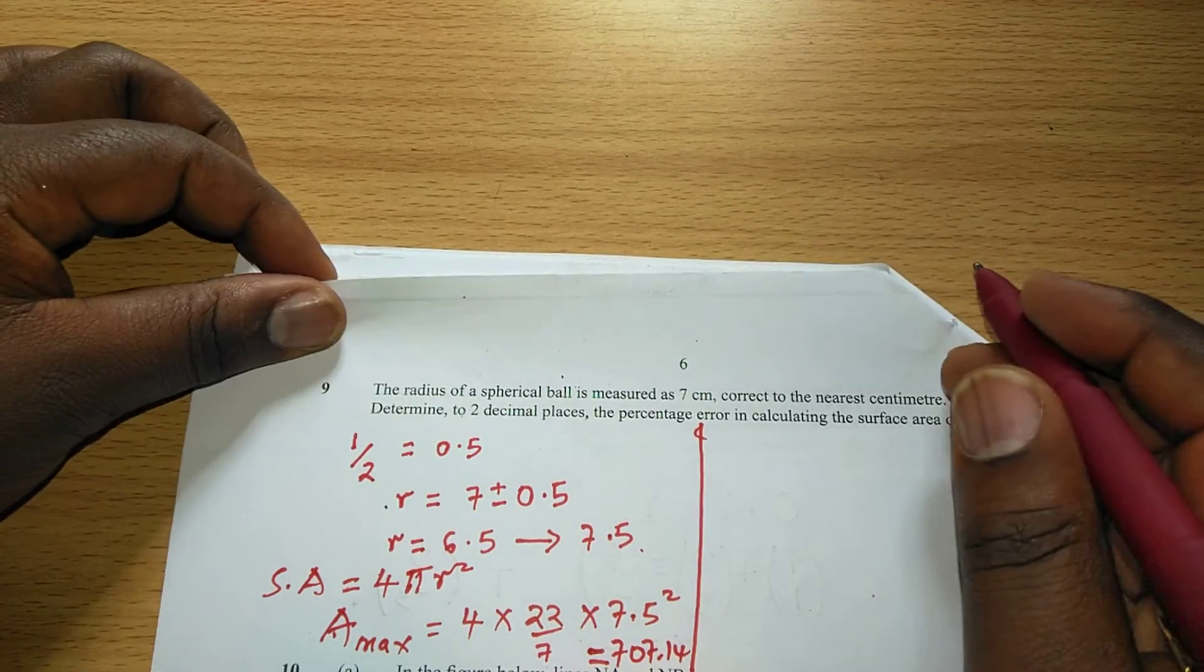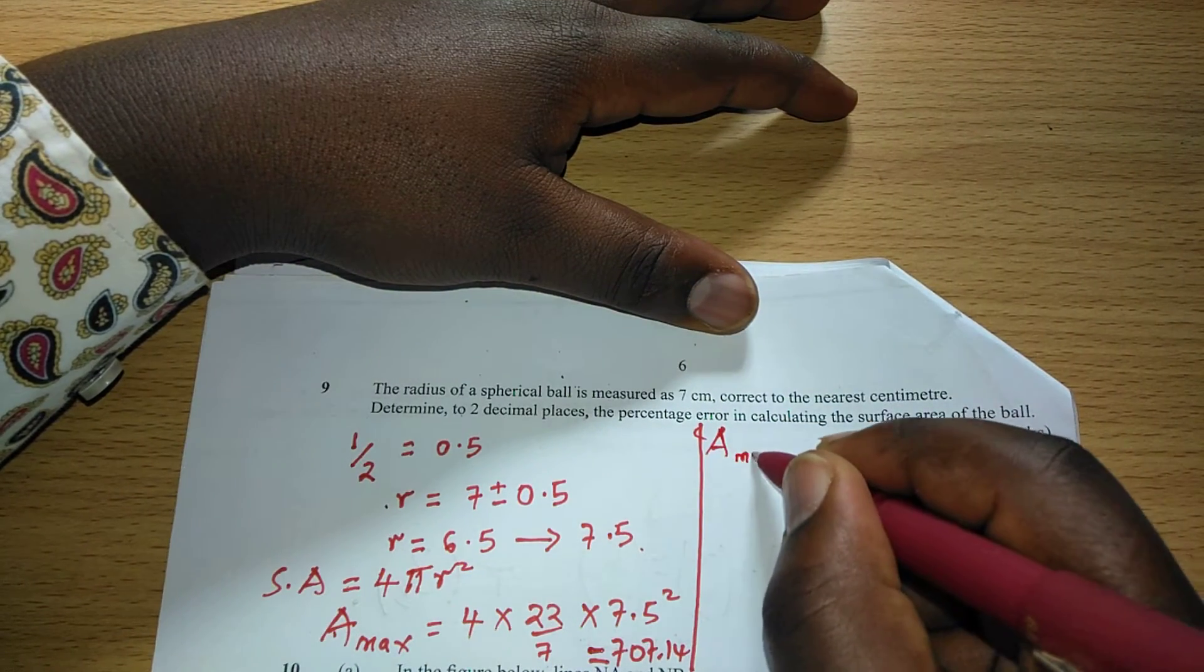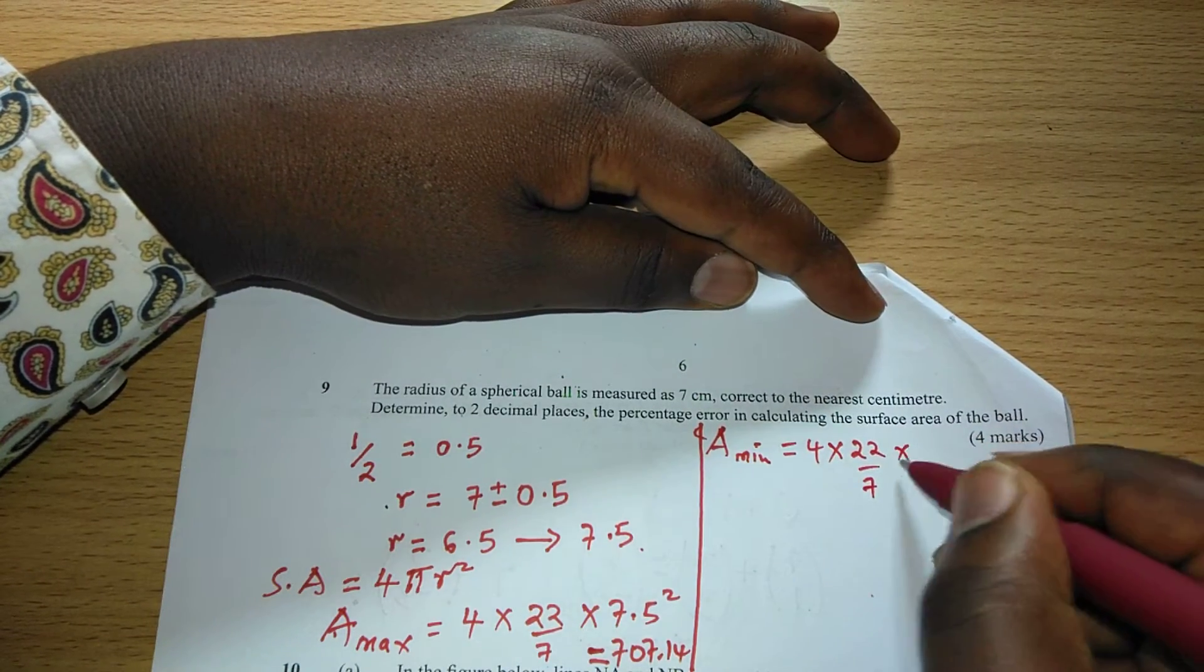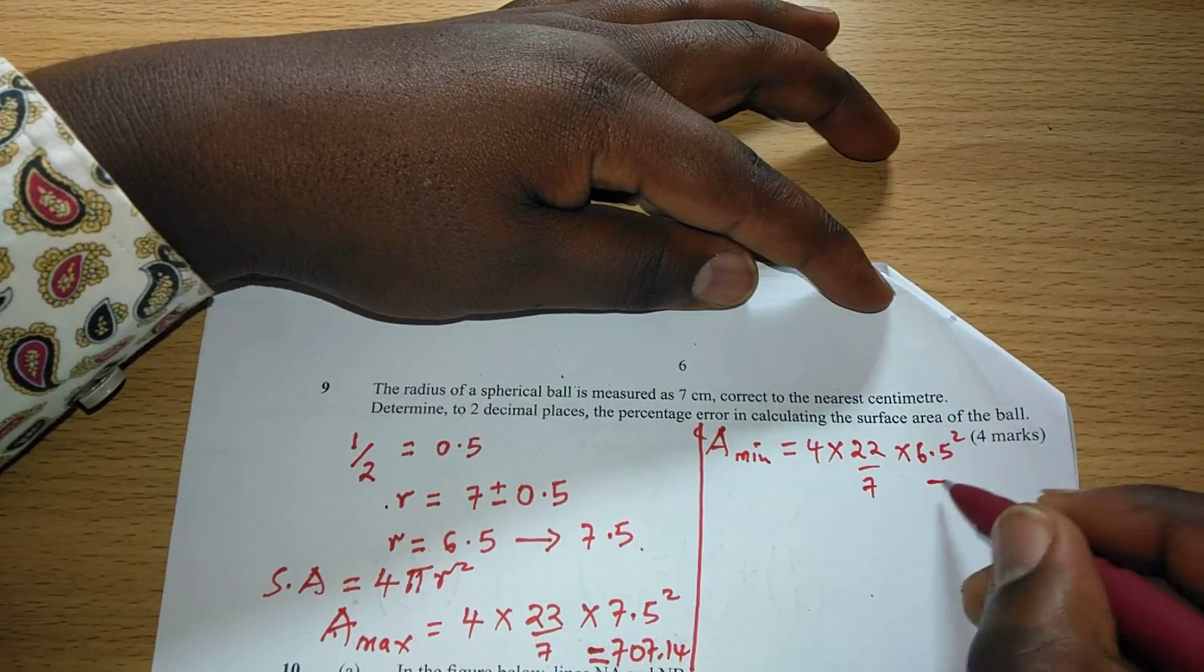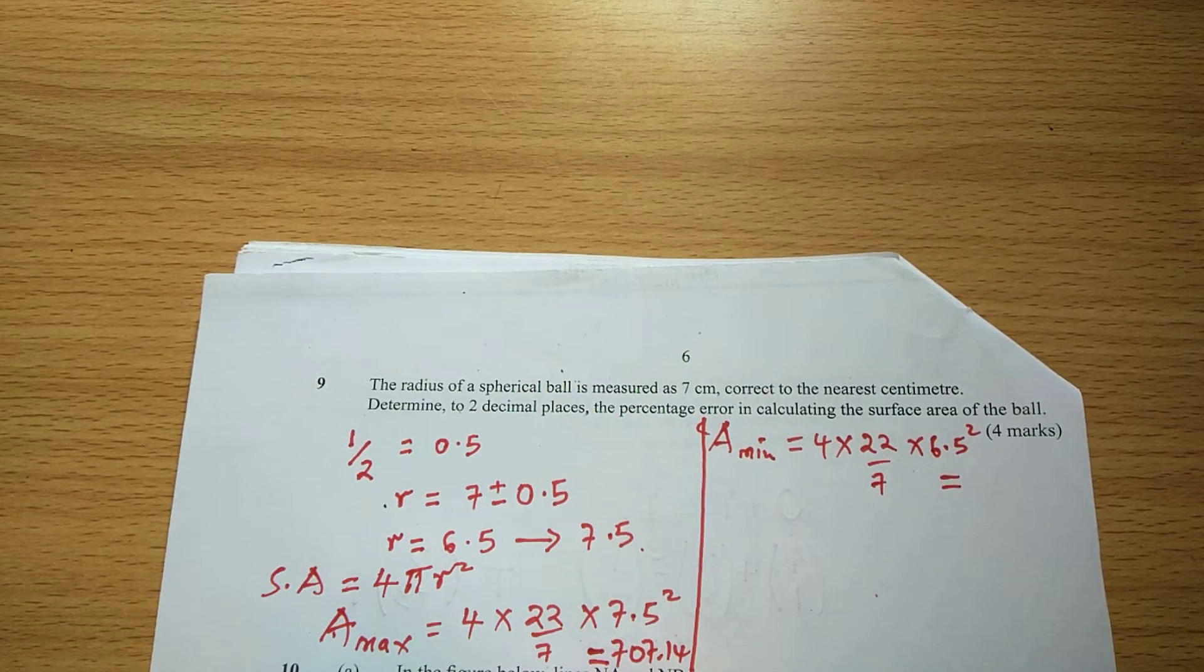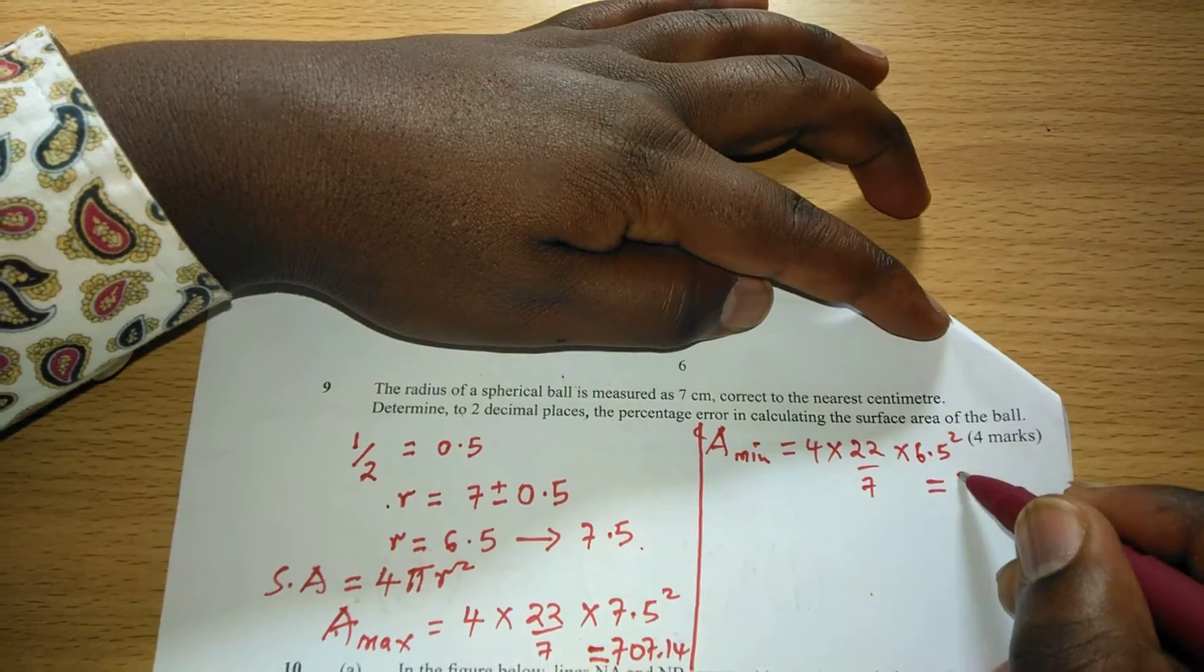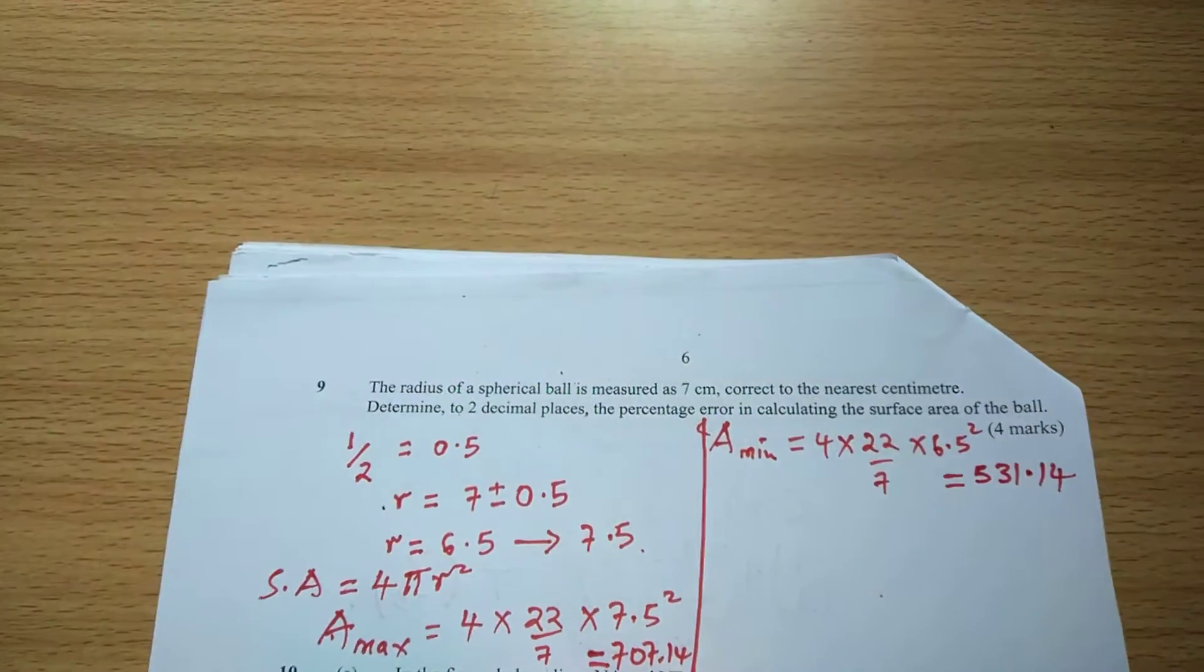Then after that now we calculate area minimum. So the minimum area is going to be 4 times π times the minimum radius squared. This is going to be 4 × 22/7 times 6.5 squared. Then we divide by 7. This would be 531.14 square centimeters.